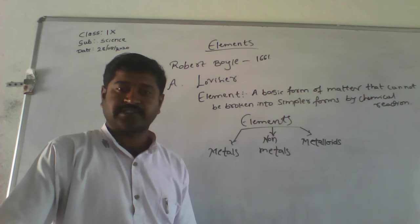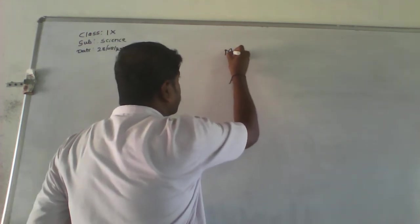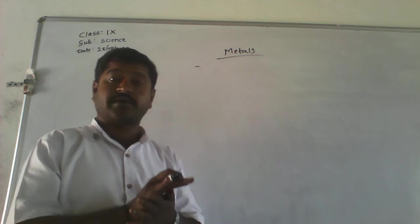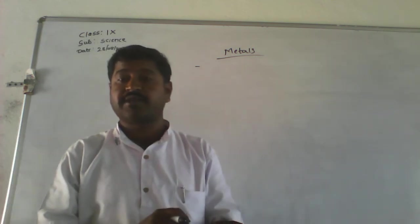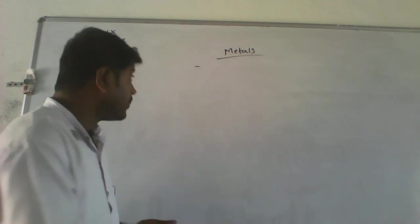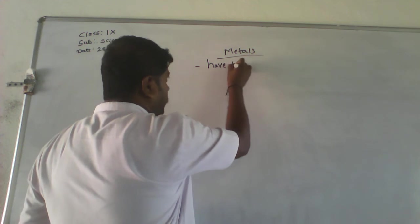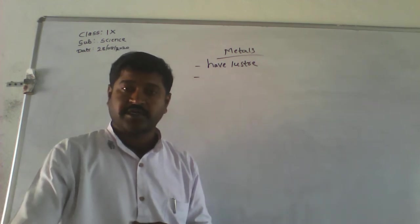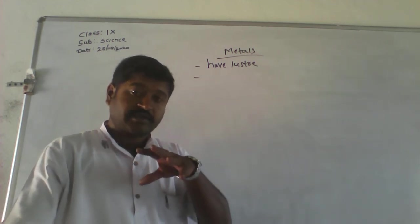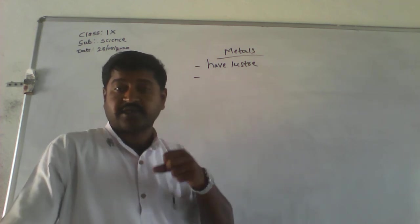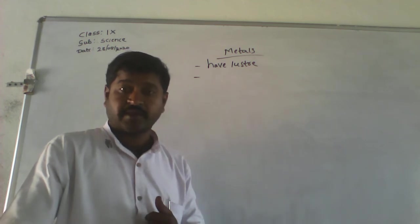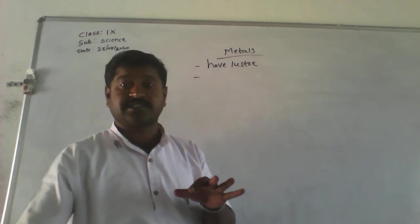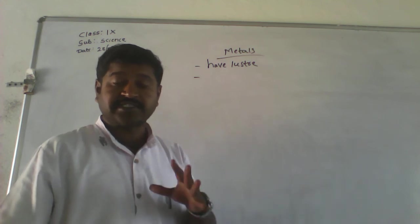Coming to metals — what are the properties of metals? Why do we call them metals? Metals have lustre — that is shininess. For example, silver has a shiny colour that attracts us. Iron is also shining. So almost all metals have lustre — they have a shiny surface.